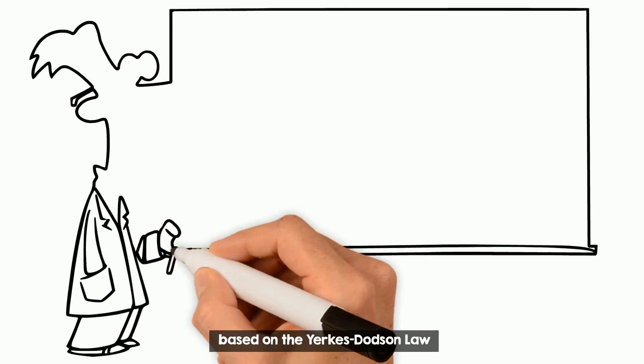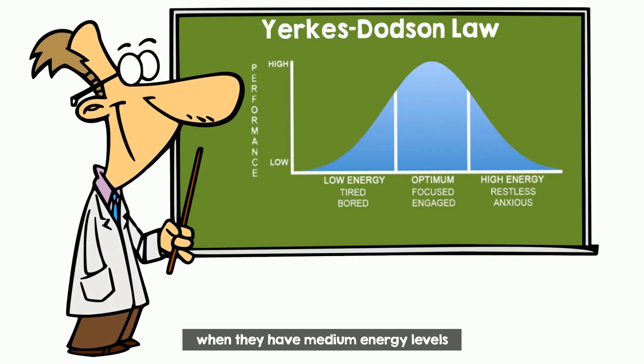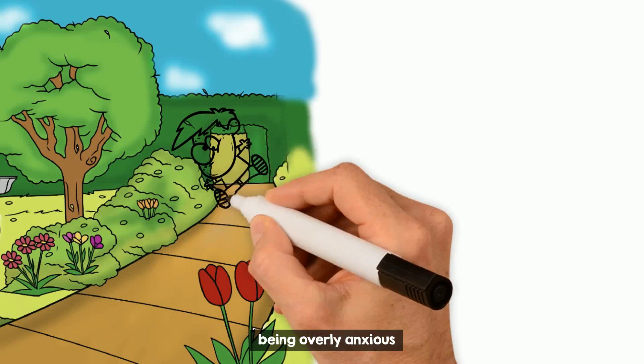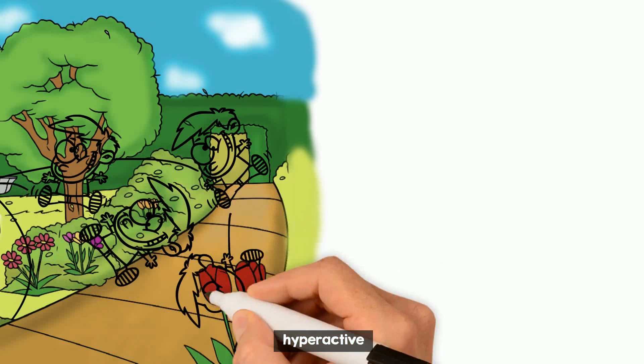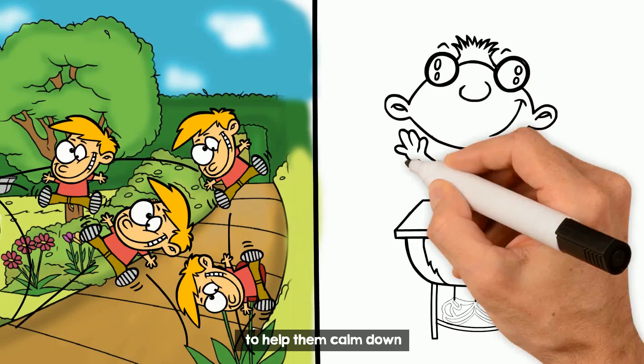The science behind bouncy bands is based on the Yerkes-Dodson Law, where people perform at their best when they have medium energy levels. When students are extra stimulated by being overly anxious, hyperactive, or frustrated, they can bounce on the band to help them calm down.